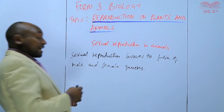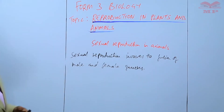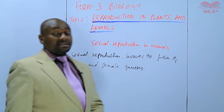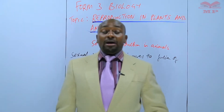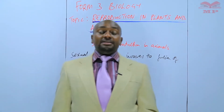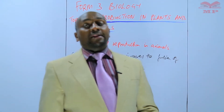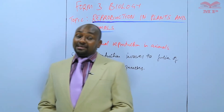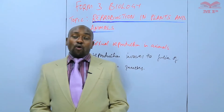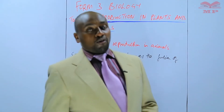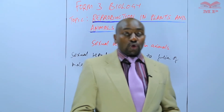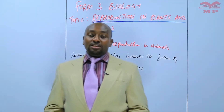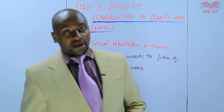In the case of animals, the male gametes are the sperms or the sperm cells, while the female gametes are the eggs or the ova. Ova is the plural. When it is one, it is called the ovum.